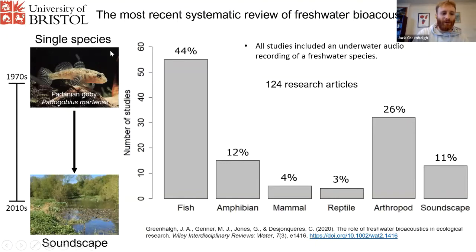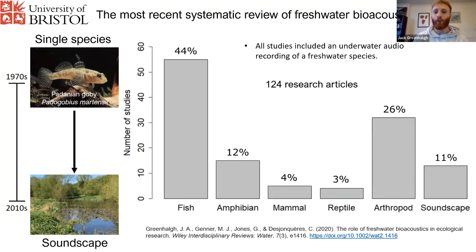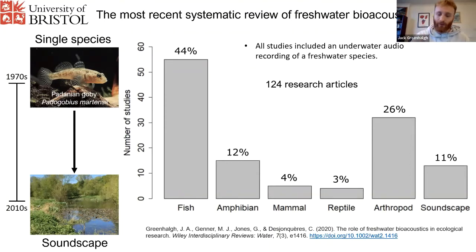At the beginning of my PhD, I also did a literature review — with Camille as well — and we analyzed 124 different research articles. What we were interested in was seeing, of the literature that's already out there, which taxonomic groups are getting the most research attention. Because we know that the arthropods, the aquatic insects, are really driving a lot of diversity and making a lot of sounds in freshwater soundscapes. Is that being reflected in the research that's happening?